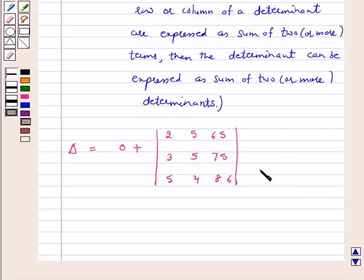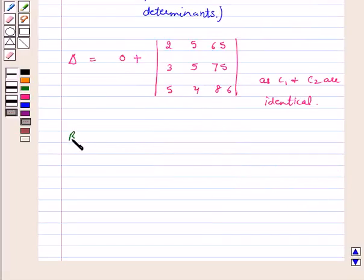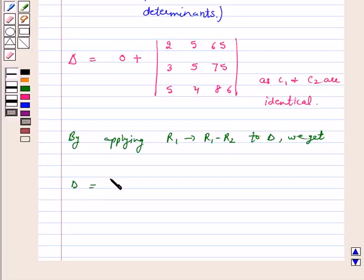As C1 and C2 are identical, by applying R1 goes to R1 minus R2 to delta, we get delta is equal to, this is 2 minus 3, minus 1, 5 minus 5, 0, 6 5 minus 7 5, this is minus 10.